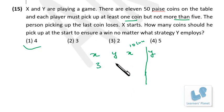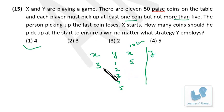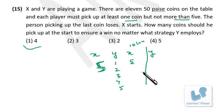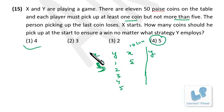If X picks 3 instead, Y can pick such that X is eventually forced to take the 11th coin — X loses. Similarly, if X picks 5, Y can pick 5 next, totaling 10, and X must take the 11th — X loses again. Picking 4 is the only starting move that guarantees X's win regardless of Y's strategy.